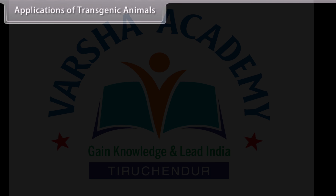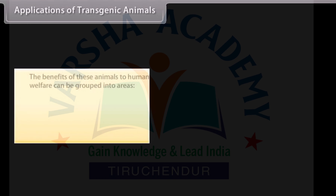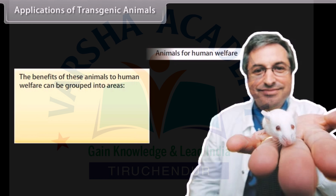Applications of transgenic animals: The benefits of these animals to human welfare can be grouped into three areas — agriculture, medicine, and industry.